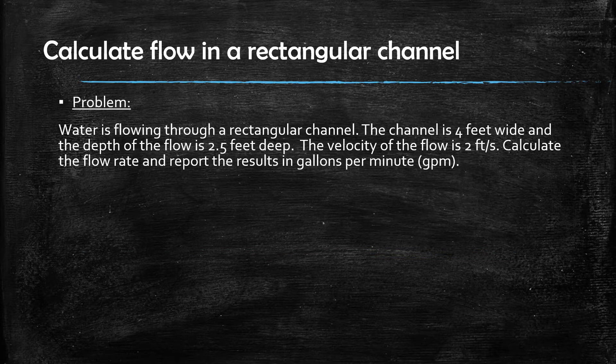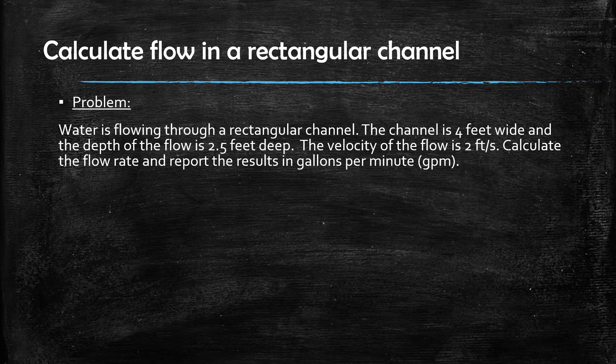The question reads: Water is flowing through a rectangular channel. The channel is four feet wide and the depth of the flow is two and a half feet deep. The velocity of the flow is two feet per second. Calculate the flow rate and report the results in gallons per minute.